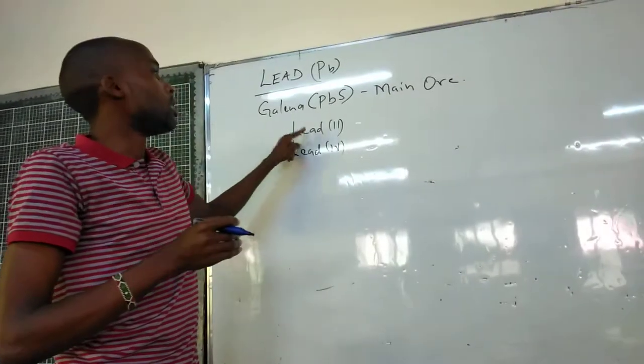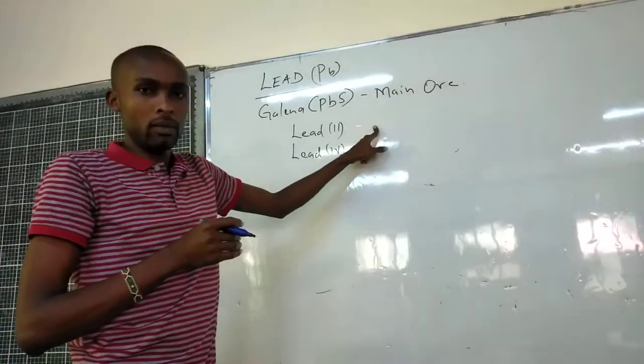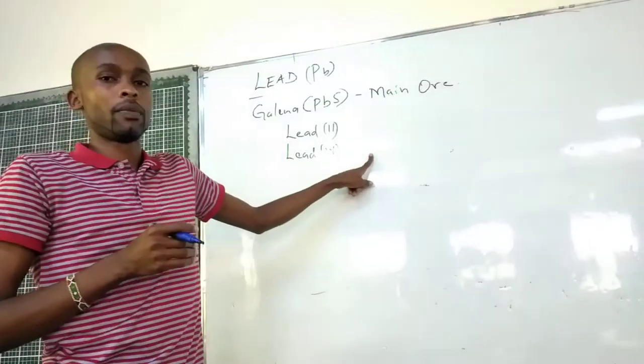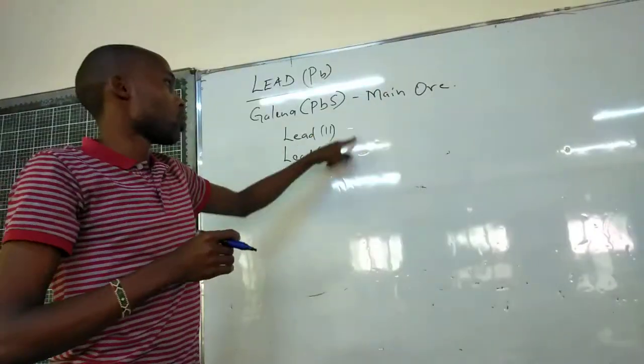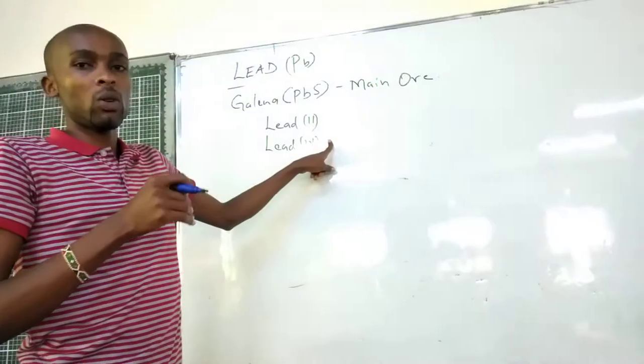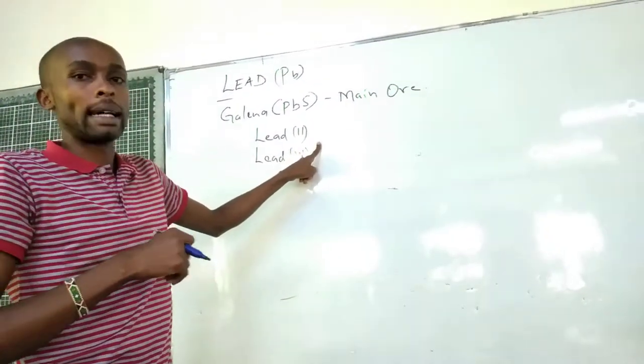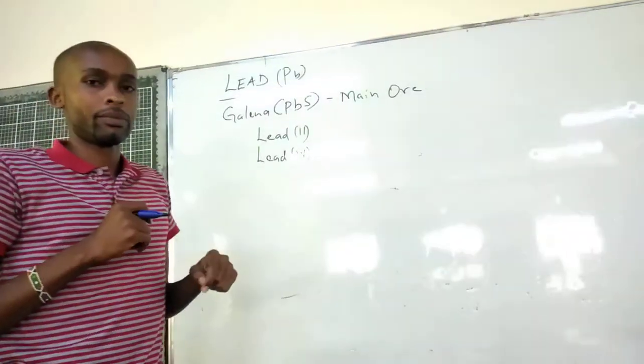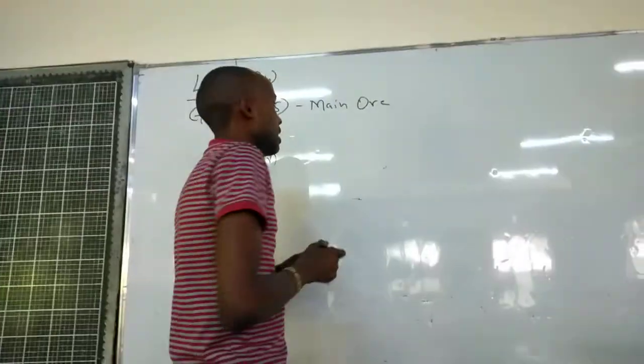So, within your course of revision, you might find one compound being referred to, for example, Lead(II) oxide, and another one, Lead(IV) oxide. So, those two compounds are compounds of the same element, which is Lead, but Lead at different oxidation states. So take note of that clearly.